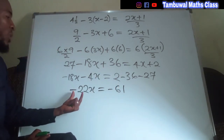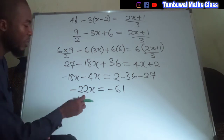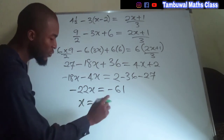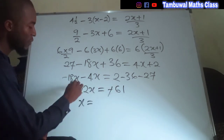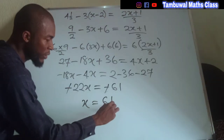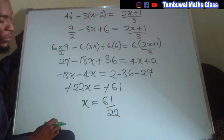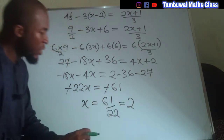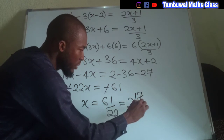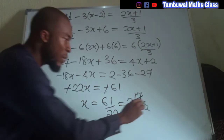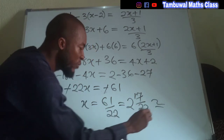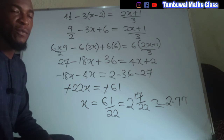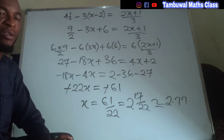To find the exact value of x, we divide both sides by the coefficient of x, which is negative 22. So x equals negative 61 divided by negative 22 — the negatives cancel out, leaving x equal to 61 over 22. As a mixed fraction, 22 goes into 61 two times with 17 remaining, giving 2 and 17 over 22. In decimal, this is approximately 2.77. Thank you for watching — do share with your learning colleagues and don't forget to subscribe to my channel for more exciting videos.